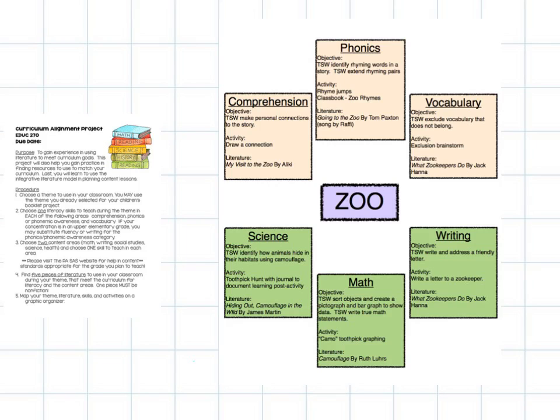So my example had science, math, and writing. You can also pick social studies. You can pick health. Whatever would best fit your theme. My objectives are taken directly from our Pennsylvania state standards or trickle-down effect from there. They're very simple objectives.